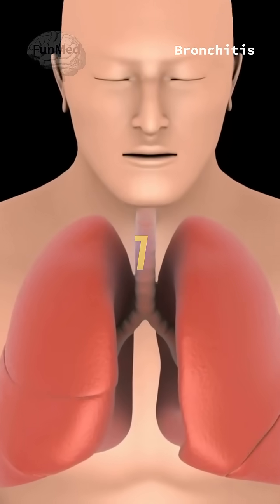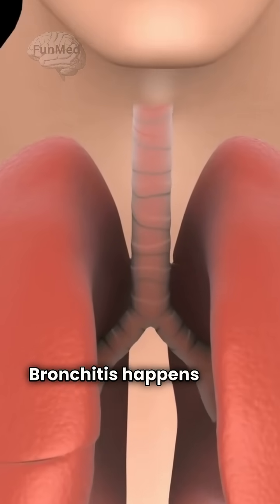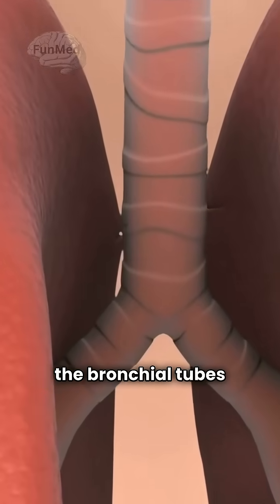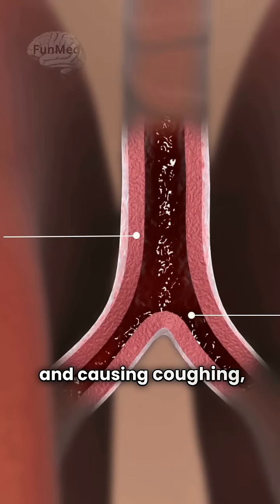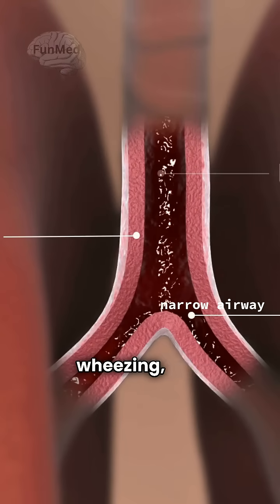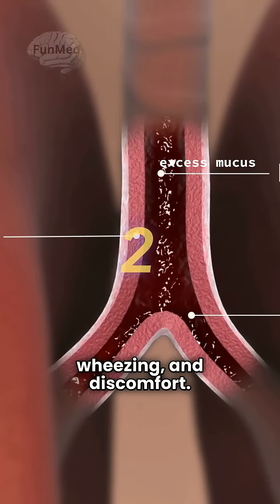Bronchitis. Bronchitis happens when the bronchial tubes become inflamed, increasing mucus production and causing coughing, wheezing, and discomfort.